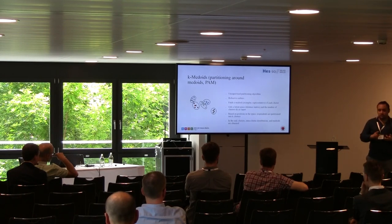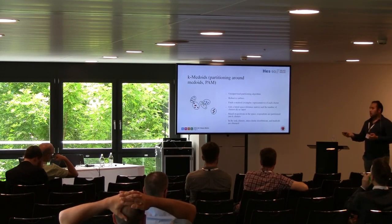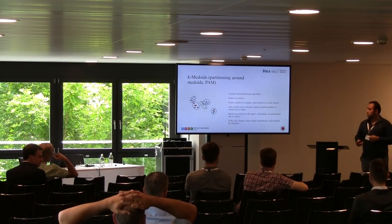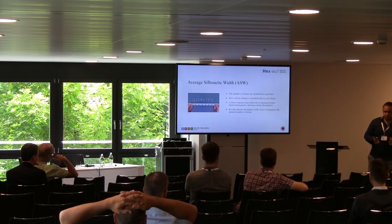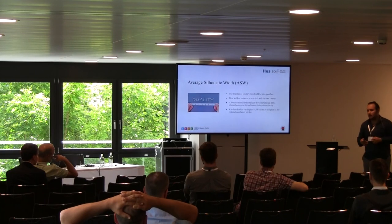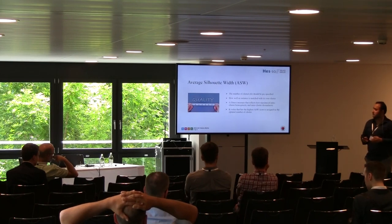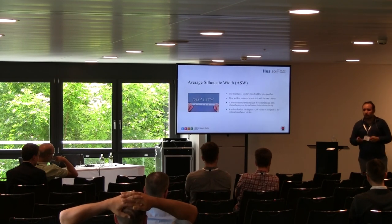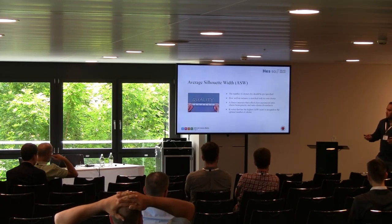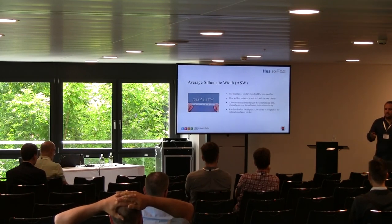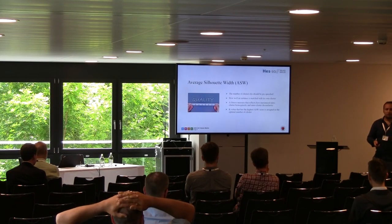The algorithm takes two inputs: first, the k number of clusters, which must be pre-specified — this is a handicap. The second input is the latent space or positions in the multidimensional social space. Since we don't know the optimal k, there are quality or fitness measures that can give us an idea. For this we use the average silhouette width metric, which measures how well an instance is matched with its own cluster — both intra-cluster compactness and inter-cluster separation. We try different k-values in an interval, and the k-value that brings the highest average silhouette width score is appointed as the optimal number of clusters.